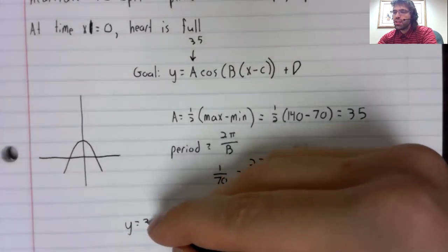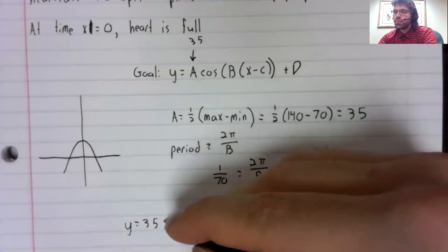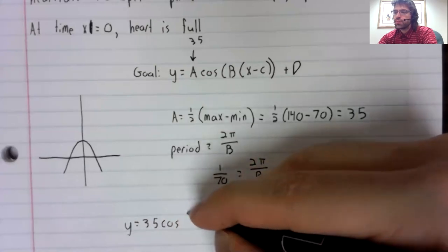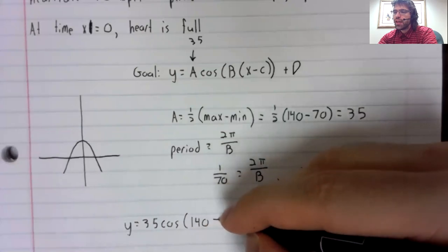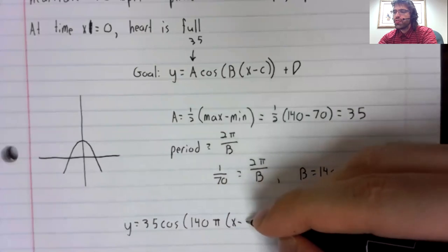B equals 140 times π. So let's copy down what we have so far.